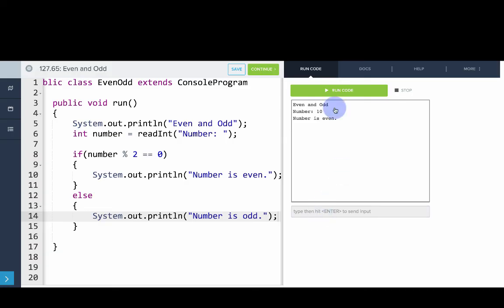Now I'll click run code again, and I'll type in 73, and that's odd. So it looks good.